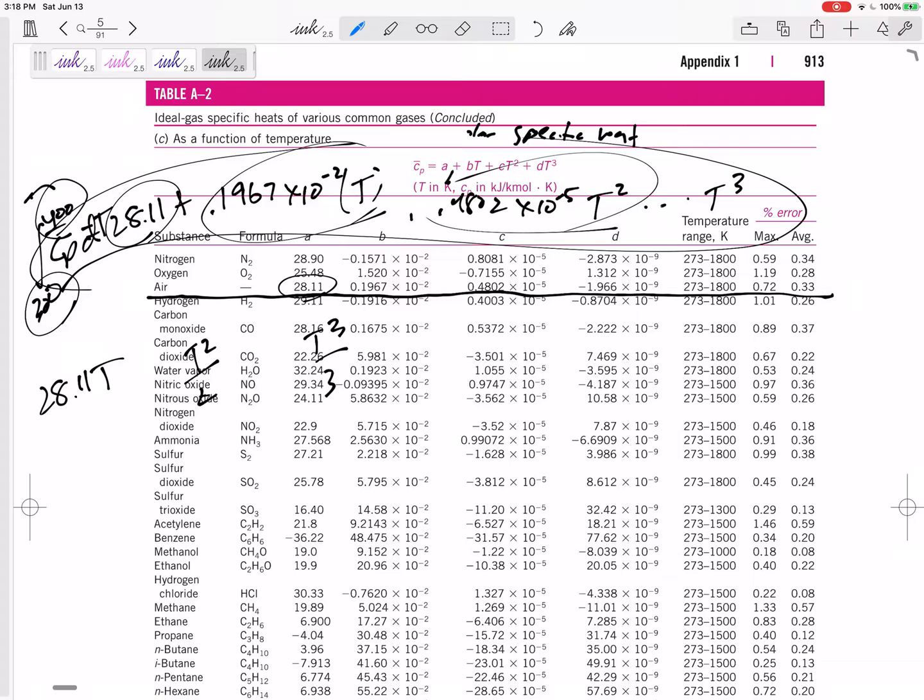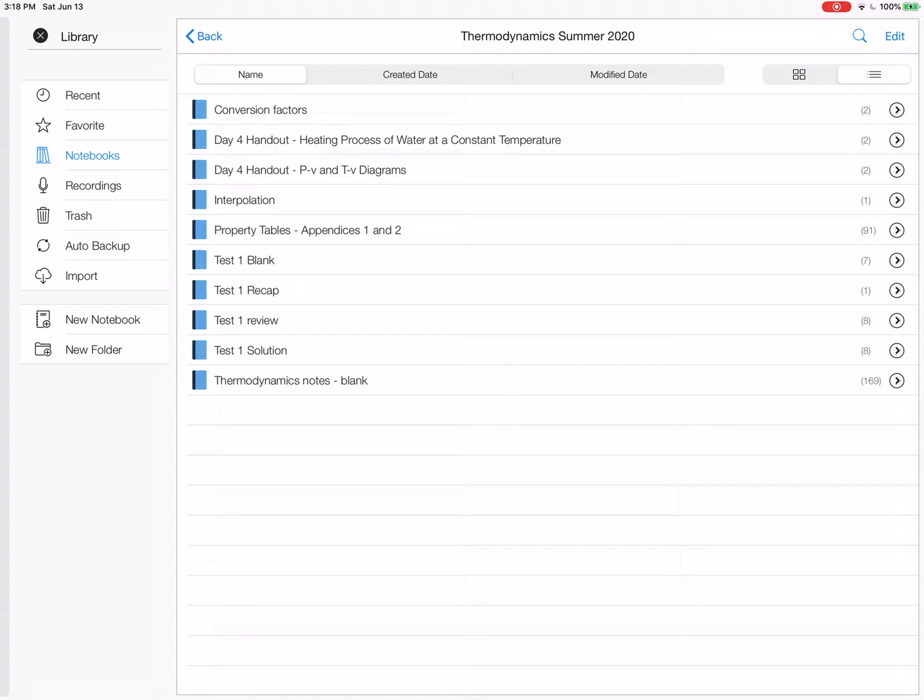There's an equation. This value with no T, this value times T, this value times T, this value times T squared, plus this value times T cubed. It's good at that temperature range. Then we'll have to integrate that.